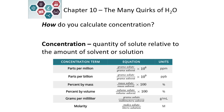We can measure concentration as parts per million, frequently abbreviated PPM. We can measure it as parts per billion, abbreviated PPB. Both of these are the grams of the solute divided by the grams of the solvent, then multiplied by the appropriate value. For parts per million, we multiply by a million, or 10 to the sixth. For parts per billion, we multiply by a billion, which is 10 to the ninth.